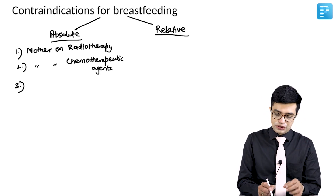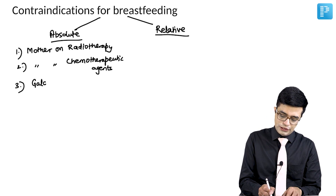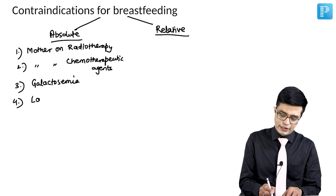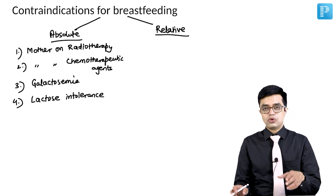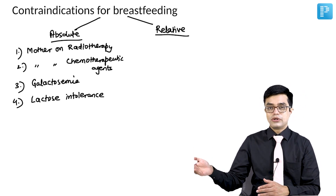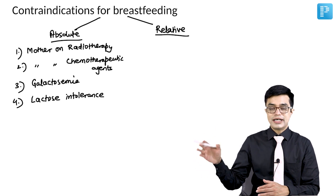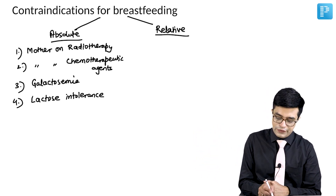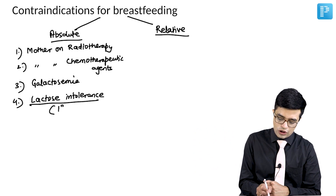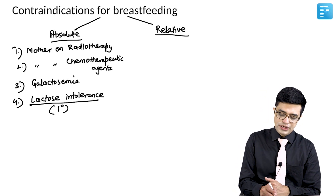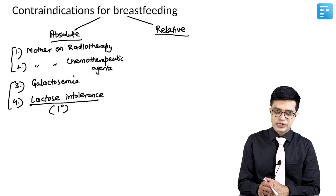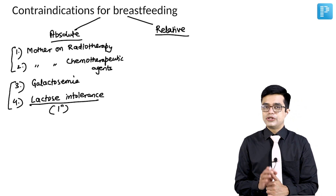Two conditions are related to the child. Third, if the child is having galactosemia, that is a contraindication. Fourth, if the child is having lactose intolerance — where lactase enzyme is not being formed. Remember, lactose intolerance more commonly is secondary lactose intolerance seen in diarrhea patients, which is self-limited and not a contraindication. We are talking about congenital or primary lactose intolerance, which is a rare inborn error of metabolism. So two conditions related to mother and two related to baby are absolute contraindications for breastfeeding.